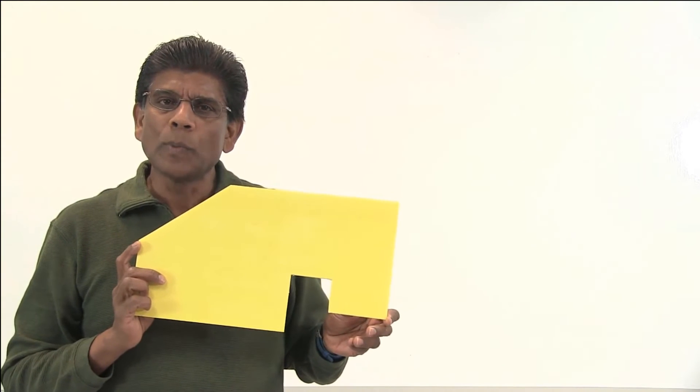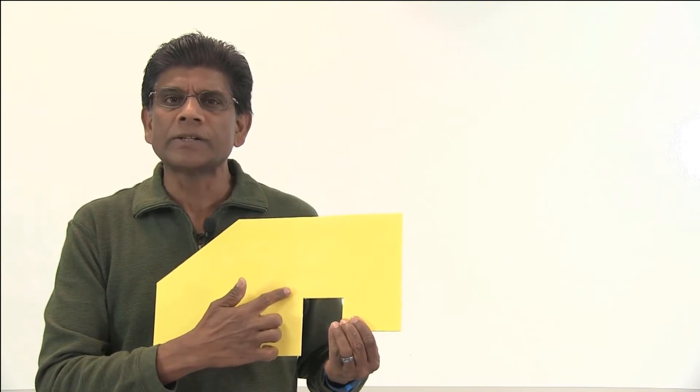For example, here is an irregular shape cut out of a poster board. I can balance this shape by supporting it right here under the center of gravity.